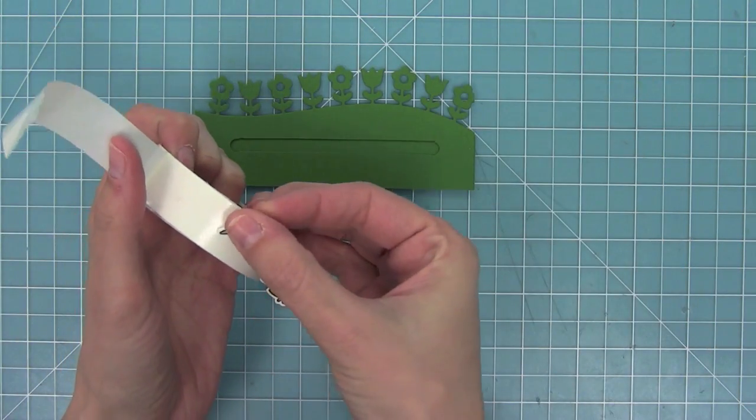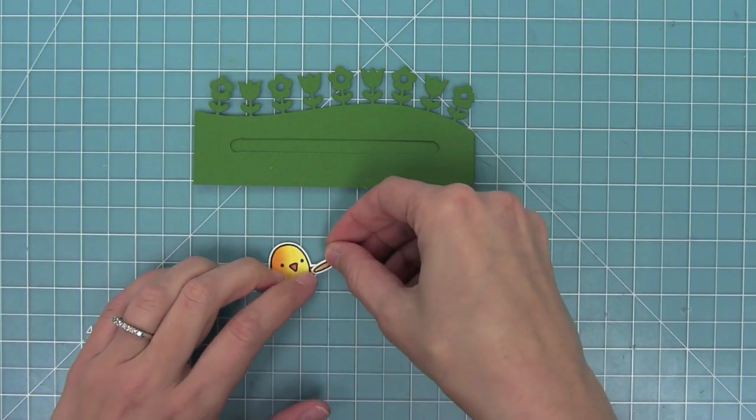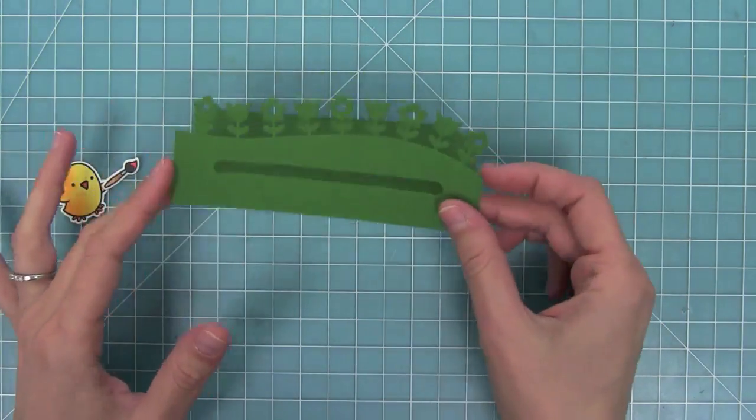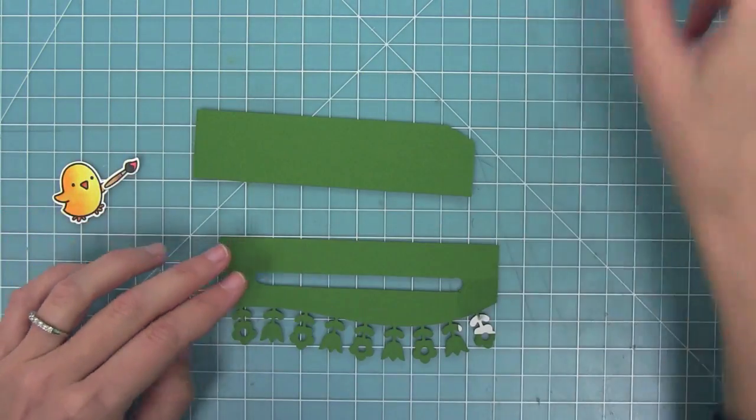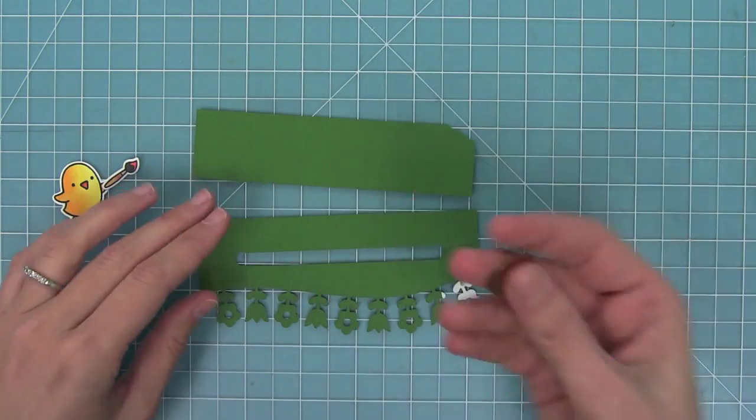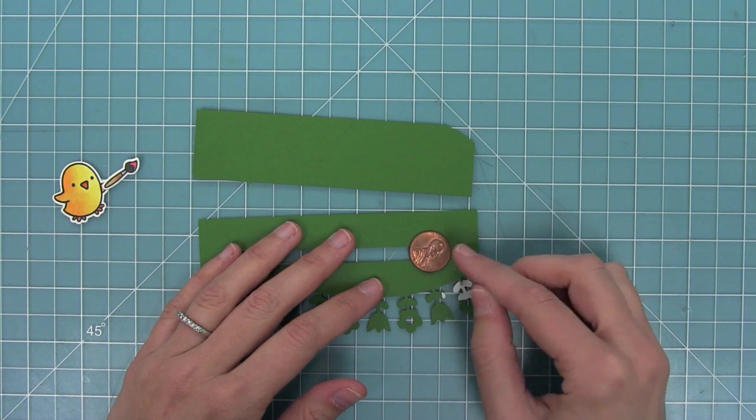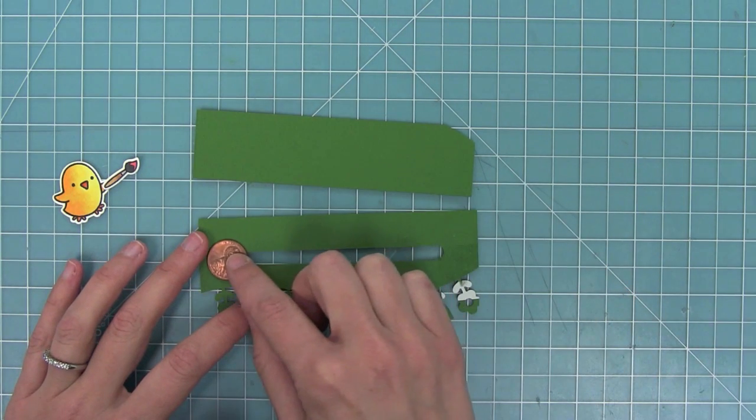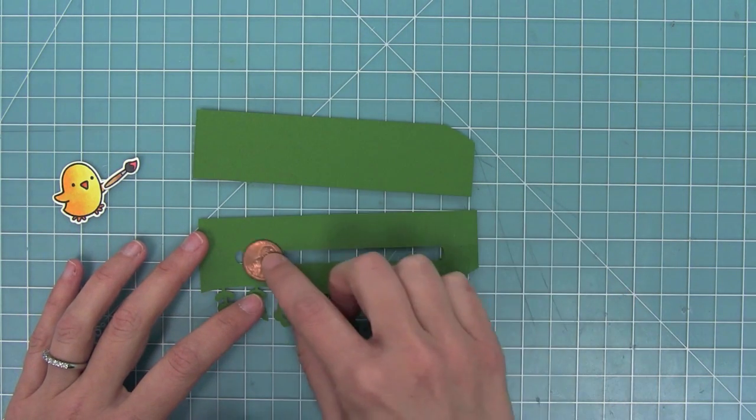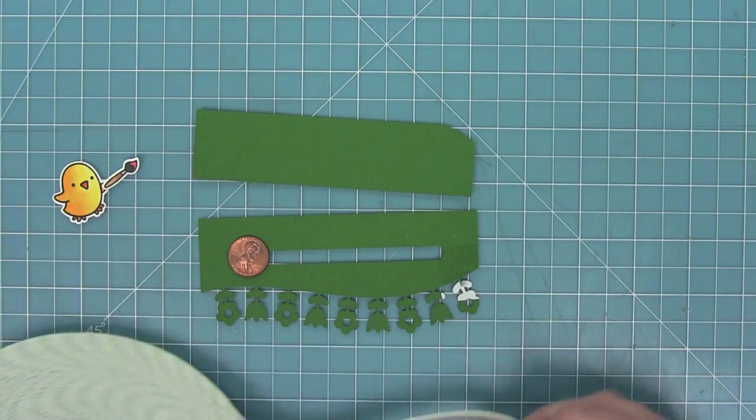Next I'm going to use a micro glue dot to attach my little paintbrush to my chick. Now it's time to work with the penny portion of this. Here is my penny, and you'll see that this is what's going to slide in that track. It's going to move all the way down and then back. The next thing we need to do is create a raised area so that this penny is able to move freely.